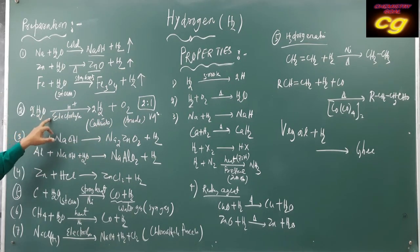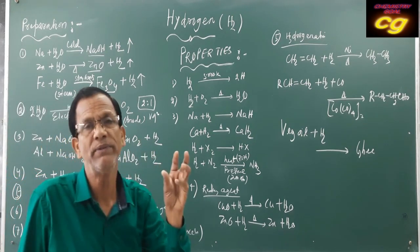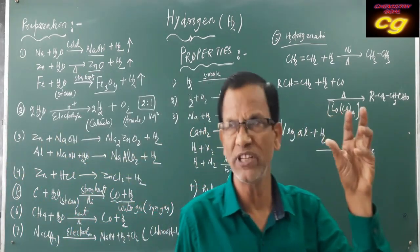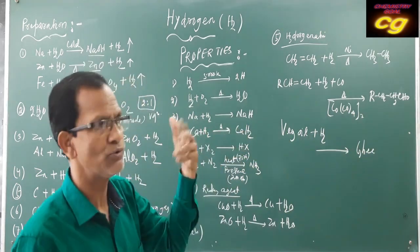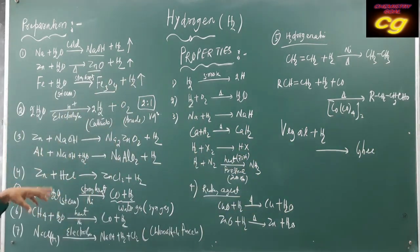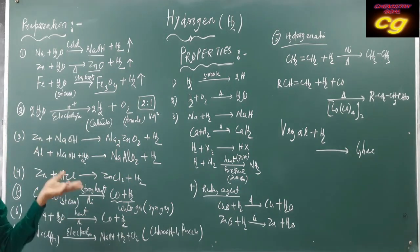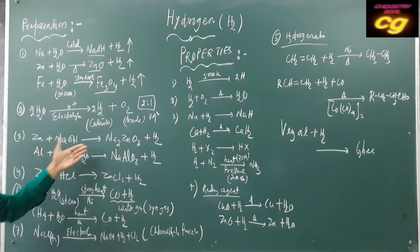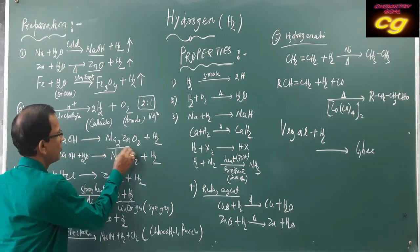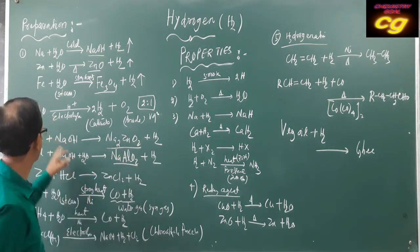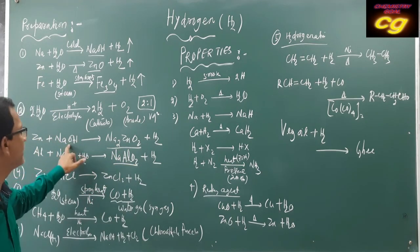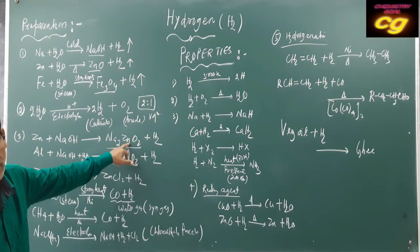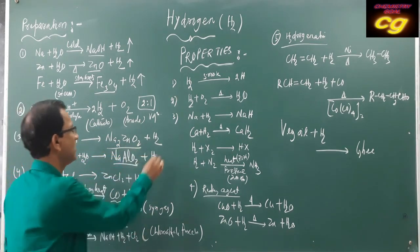Some amphoteric metals — metals which have both acidic and basic properties and react with both acid and base — such as zinc and aluminum react with base forming a salt. Zinc reacts with sodium hydroxide forming sodium zincate (Na₂ZnO₂) and hydrogen gas is produced.